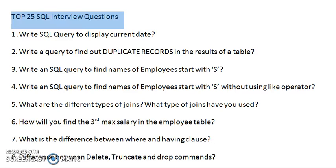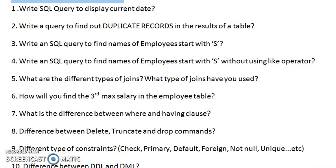What are the different types of JOINs and what types of JOINs have you used? How will you find the third maximum salary in the employee table? What is the difference between WHERE and HAVING clause?